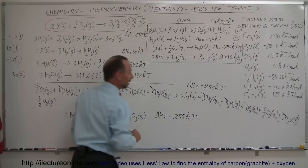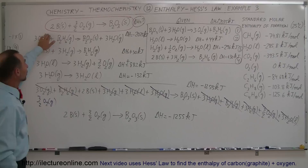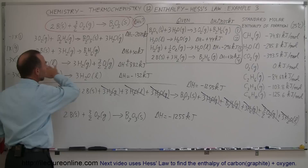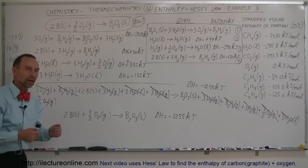So notice this is a powerful technique. We could not easily measure this enthalpy in a laboratory, but by combining reference equations — reversing them and multiplying by appropriate numbers — we can add their known enthalpy changes together to obtain the enthalpy change of the target reaction: delta H equals minus 1,255 kilojoules. That's how you apply Hess's Law.